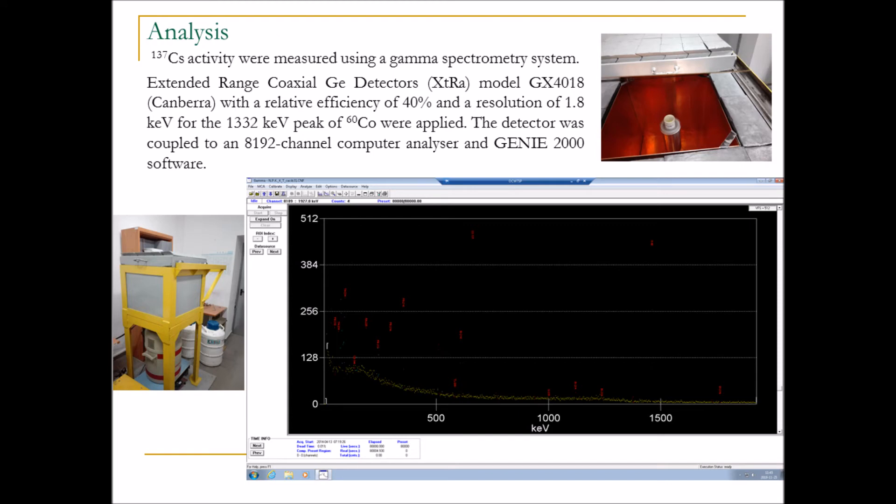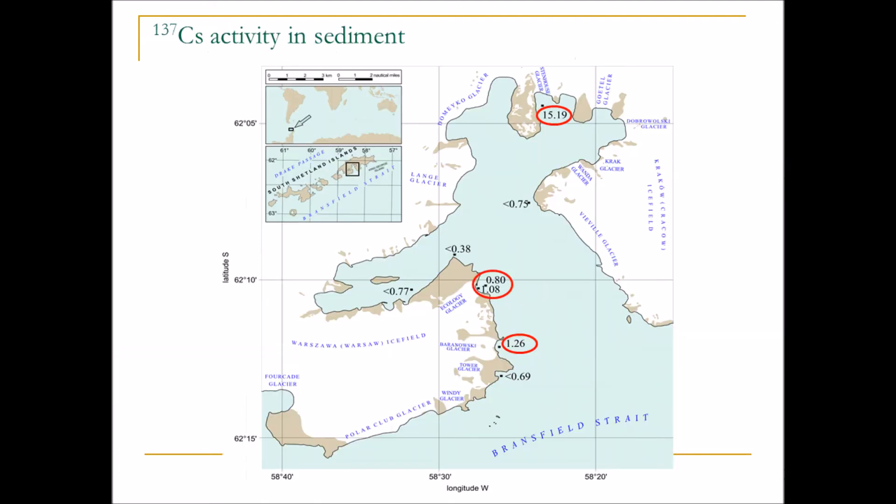Cesium-137 activity was measured using a gamma spectrometry system with a relative efficiency of 40%. The activity of Cesium-137 in the bottom sediment was higher at stations located closer to the glacier than at stations located further from the glacier.